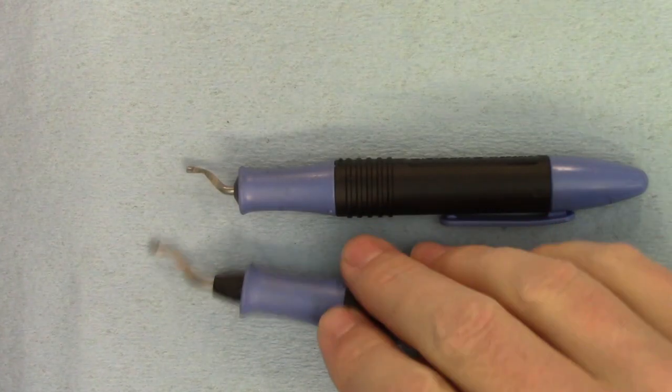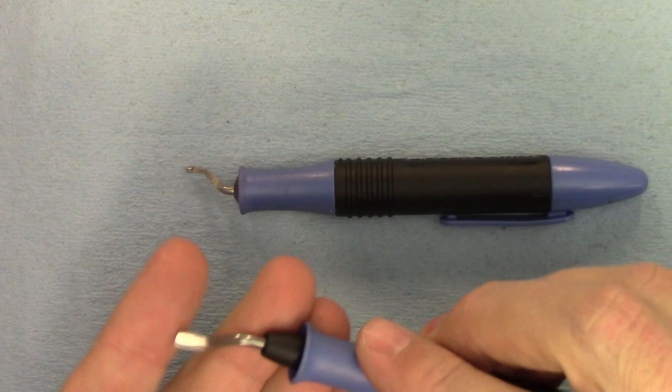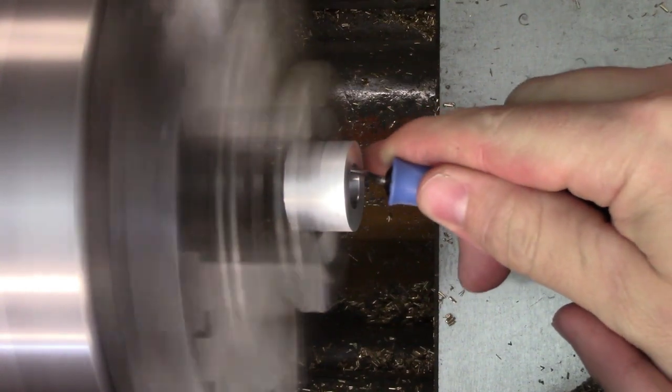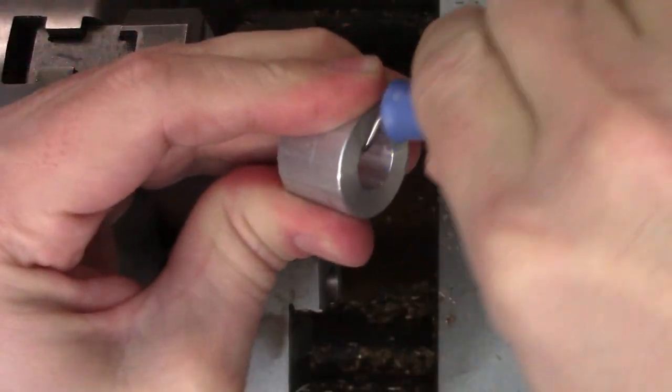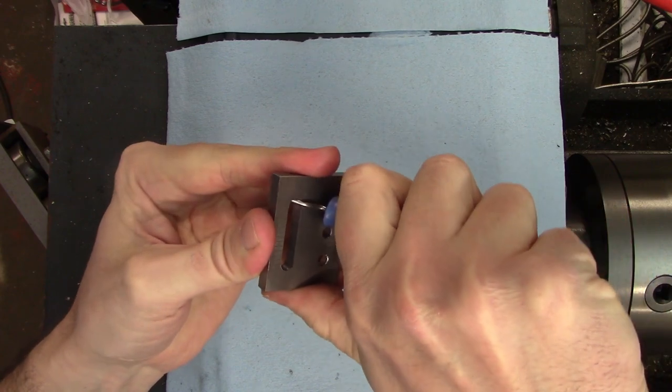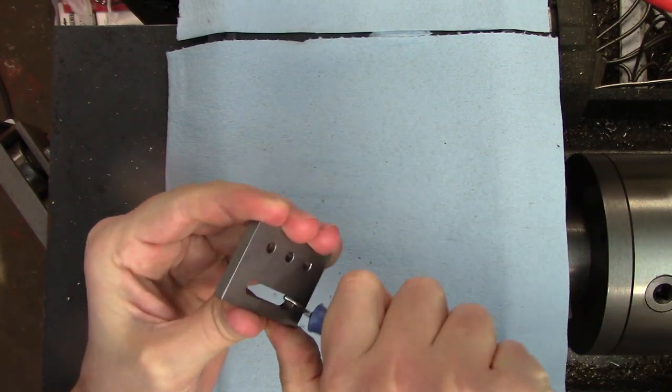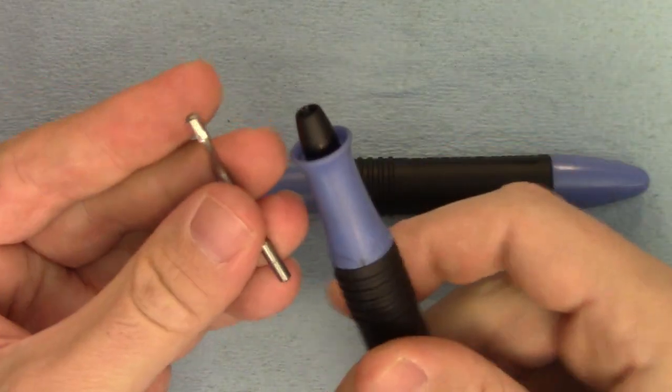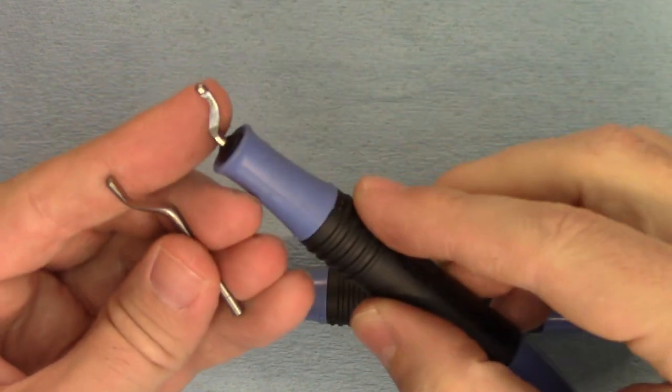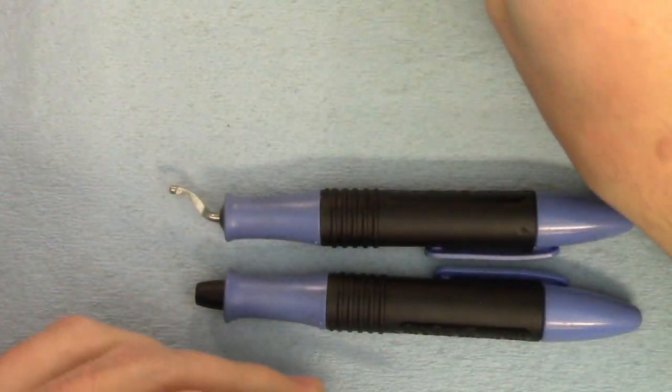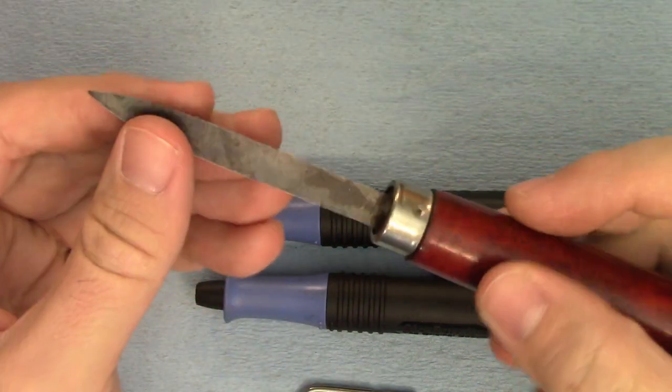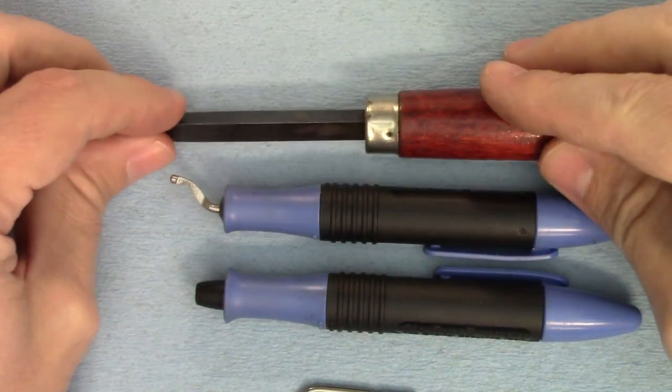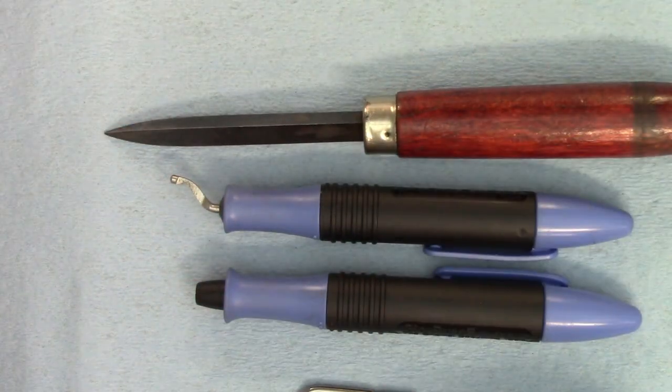Next up are these swiveling deburring tools. The curved blade pivots around to follow the edge of the part. They work great for quickly breaking the edges on holes either on or off the machine. They're equally at home on straight edges though and I use them all the time on keyways and slots. Most of them have interchangeable blades and there are a lot of different types for different materials and shapes of parts. Triangular scrapers can also do a lot of these same tasks and are also available in different sizes. Both of these work well on light burrs, but they tend to get hung up on heavier ones.